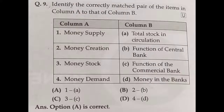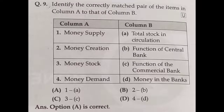Question number nine: identify the correctly matched pair of items in column A to column B. Money supply — it is the total stock in circulation — that is correct. So answer option A is the correct answer.